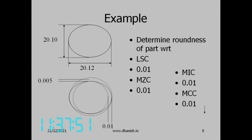Roundness is the distance between two concentric circles — remember the definition of straightness is similar: e_max minus e_min. So the roundness error here is 0.01.